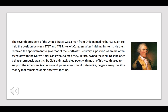The seventh president was a man from Ohio named Arthur St. Clair, who left Congress after finishing his term. He then received an appointment as governor of the Northwest Territory. Despite once being enormously wealthy, St. Clair ultimately died poor, with much of his wealth having been used to support the American Revolution.